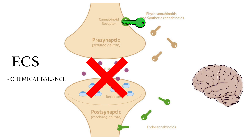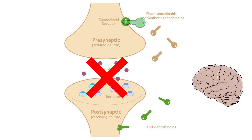The phytocannabinoid THC is represented by the brown keys in the diagram. THC fits into the same receptor as the endocannabinoids and produces the exact same effect as the endocannabinoids.